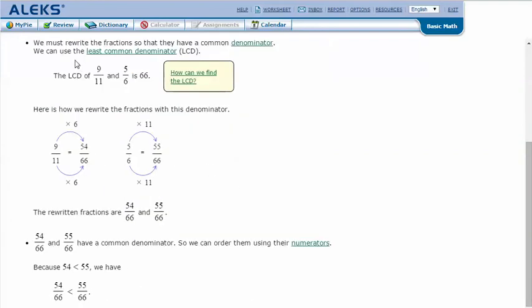We must rewrite the fractions so that they have a common denominator. We can use the least common denominator. The least common denominator of 11 and 6 is 66. The least common denominator is actually the least common multiple.